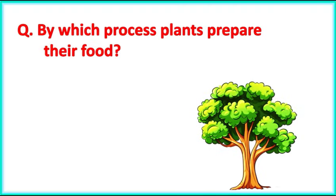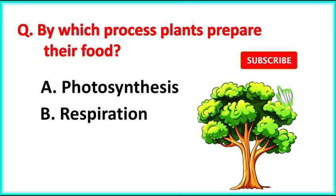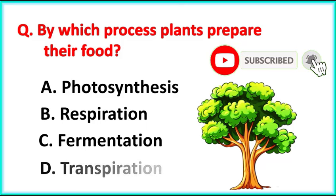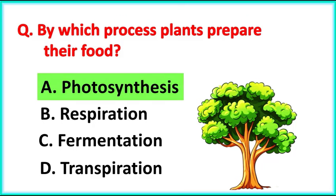By which process do plants prepare their food? The correct answer is Option A. Photosynthesis.